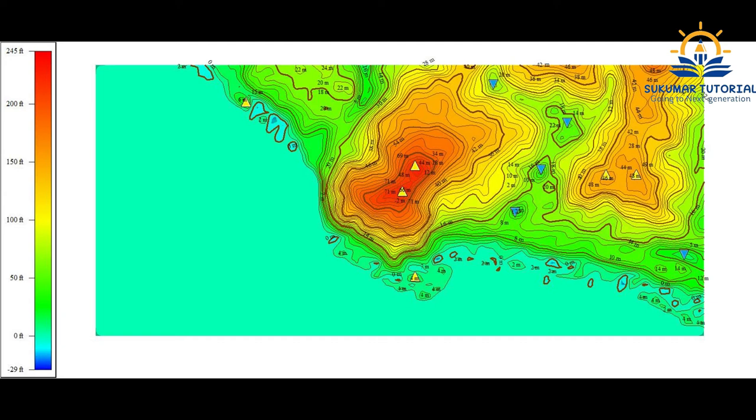This is a contour map. You can see the contour pattern, the relief, and the highest points. From this you can infer the relief of this area. This is about a 1-meter contour interval. It shows how the area has been dissected by fluvial action.